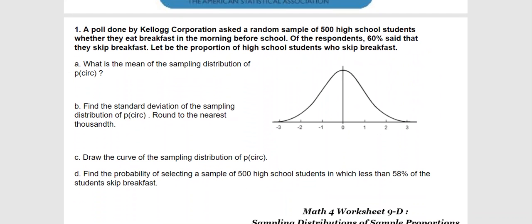Number one, we're talking about a sampling distribution looking at a sample proportion. In this case, 60% said that they skip breakfast. The mean of the sample proportion is going to be 0.6, that's 60%. The standard deviation of this group is the square root of 0.6 times 1 minus 0.6, which is 0.4. They both add up to 1, and the group was 500, so we'll put 500 underneath it.